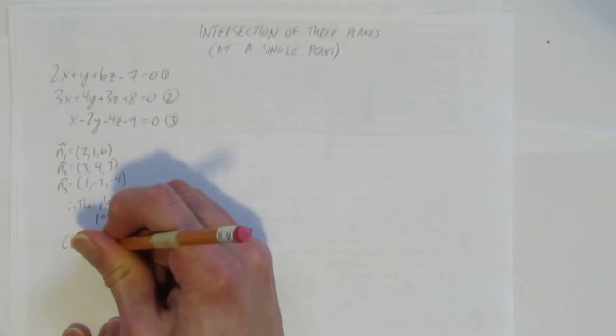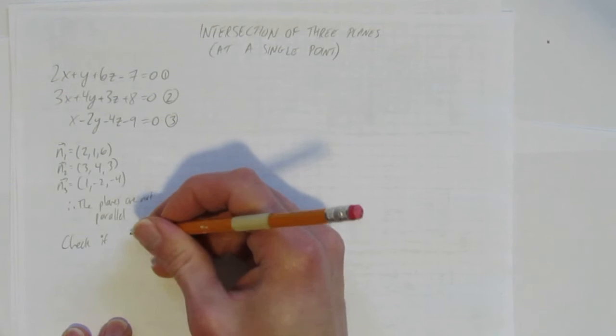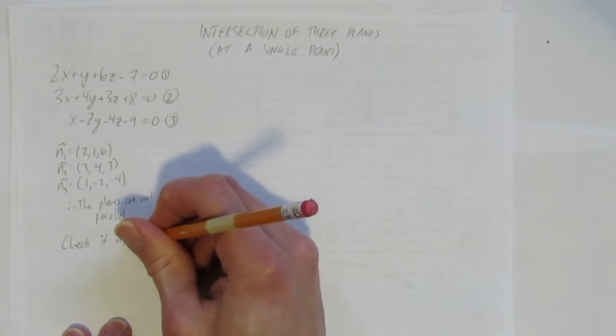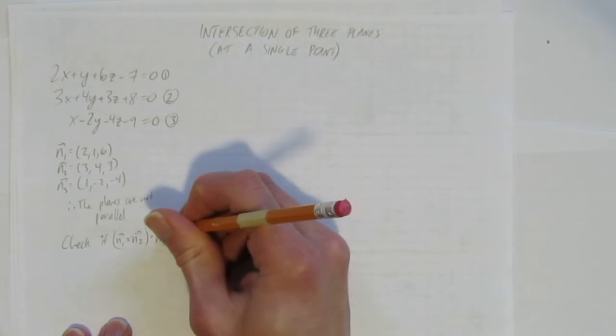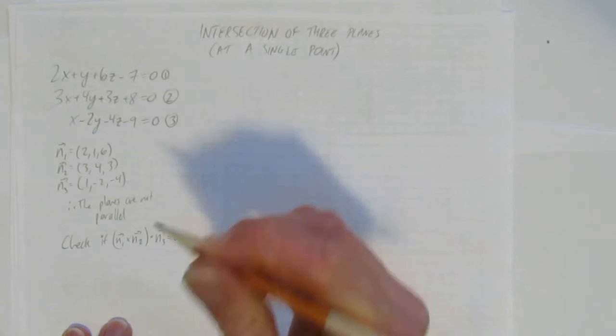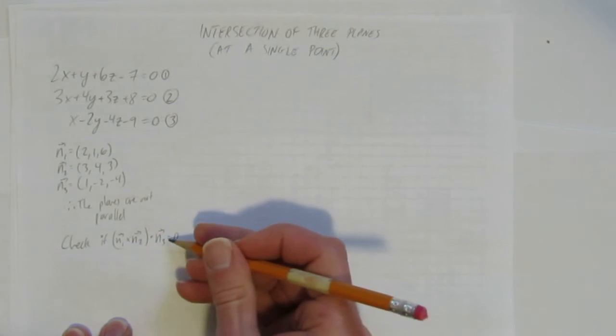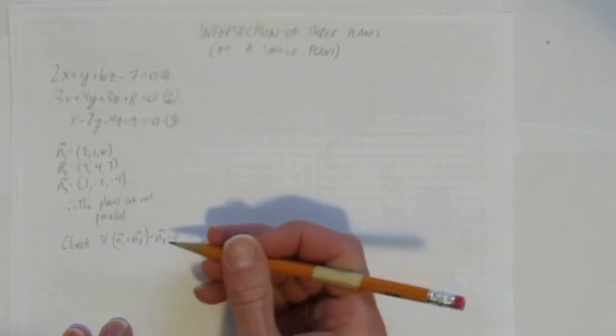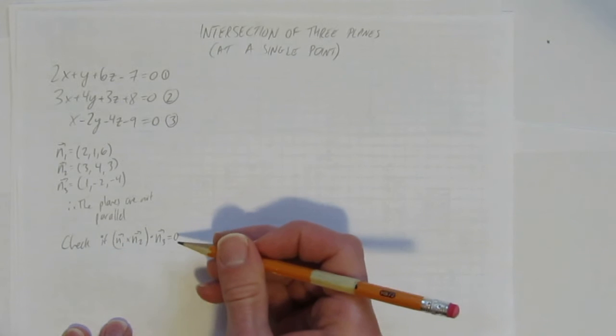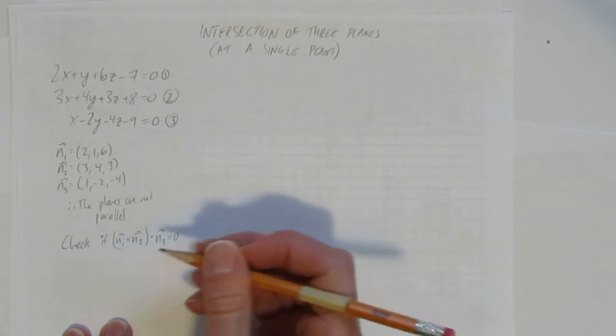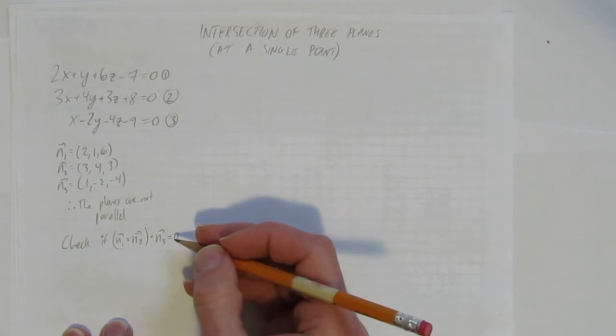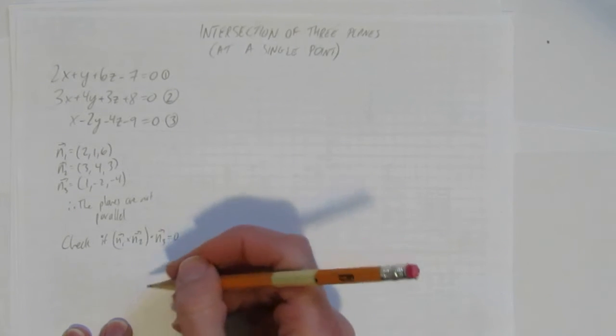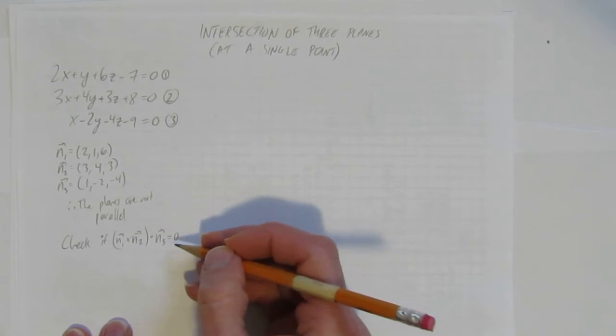So, now I want to check if the normal vectors themselves are coplanar. That is, check if n1 cross n2, the cross product of this, dotted with n3, equals 0. We want to see if this cross product, then dot product—it's called the triple scalar product—if it equals 0, then we have something different. We're hoping it won't be 0, because then it intersects at a point.